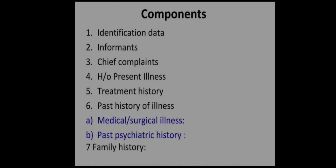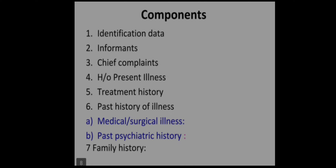So let's start. The first component of psychiatric history collection is the identification data. Second is the informant. Third is the chief complaint. Fourth is the history of present illness. Fifth is the treatment history. Sixth is the past history of illness, which is divided into two parts: medical and surgical illness, and past psychiatric history. The seventh component is family history.